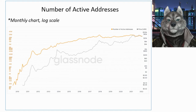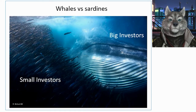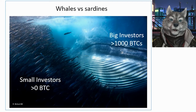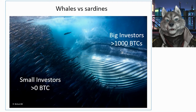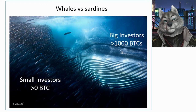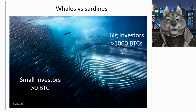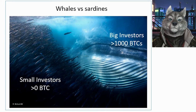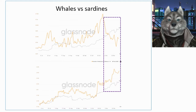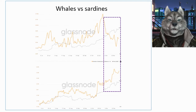Still in the analysis of addresses, we can evaluate the famous relationship between whales and sardines. We do this by looking at the total balance that each address has. For example, we can count how many addresses in the Bitcoin network have more than 1000 Bitcoins — that number indicates the total number of whales in the market. Similarly, we can look at the total number of addresses with a balance greater than zero. When the number of addresses with balance greater than zero falls and the number of addresses with more than 1000 Bitcoins rises, it means that whales are probably buying Bitcoins from sardines.